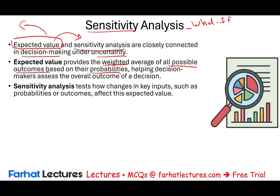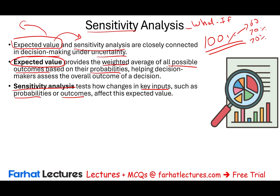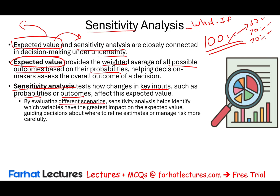Now we're going to add another layer. The main reason we compute expected value is because we don't know 100% what's going to happen deterministically. We know maybe 60% things will be good, 20% things will be bad, and 20% things will be perfect. In sensitivity analysis, we test how changes in key inputs — such as probabilities or outcomes — affect the expected value. We can change those percentages: what if it's not 60% for the best case? What if it's 40% or 50%? By evaluating different scenarios, sensitivity analysis helps identify which variable has the greatest impact on the expected value, giving decision makers more information to refine estimates or manage risk more carefully.